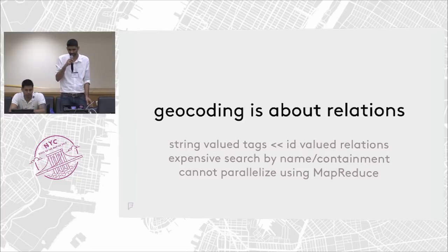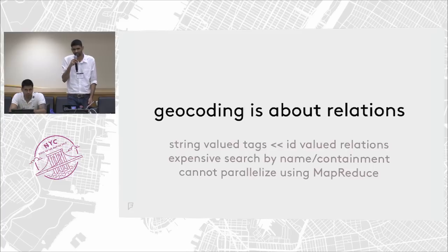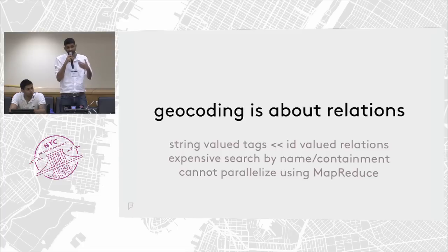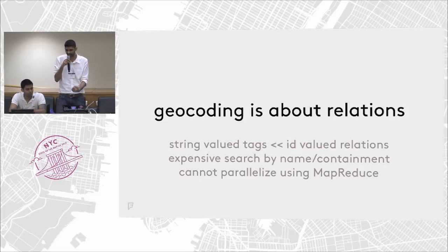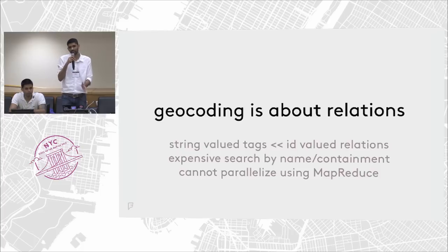Furthermore, geocoding is all about context and relationships — which makes it obvious what it would benefit the most from: relations. From the point of view of software, working with string-valued tags instead of ID-valued relations is extremely wasteful and inefficient. Every OSM geocoder expends a bunch of effort during index time to resolve these tag references by either searching by name or searching by containment — matching a house number to a street, a street to a city, or grouping multiple segments of the same street. Not only does this slow down index builds at present, but in the future this is going to stand in the way of parallelizing these index builds using MapReduce.